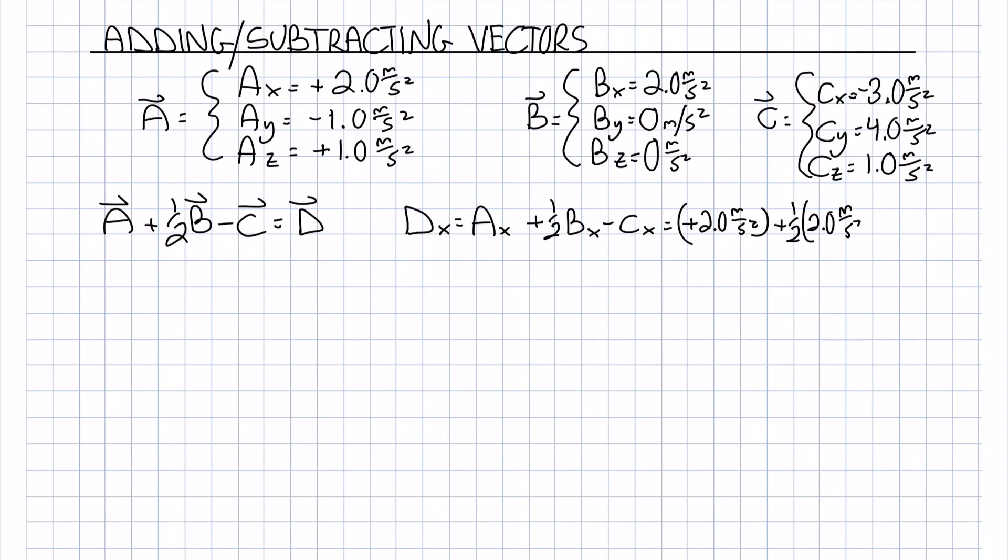So if we work that out and plug the numbers given to us from the components of the vectors above, we get Dx is equal to 0.0 meters per second squared. If we do Dy equals Ay plus one half By minus Cy...